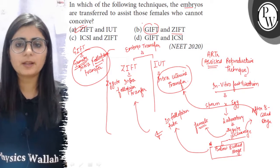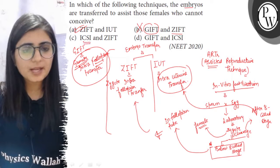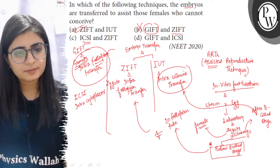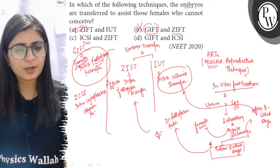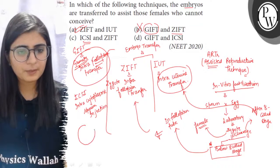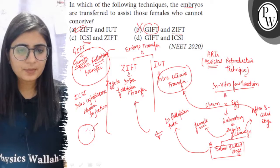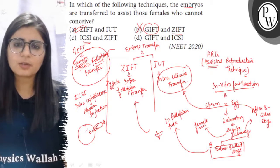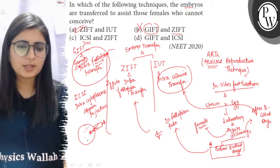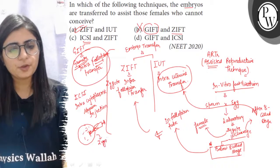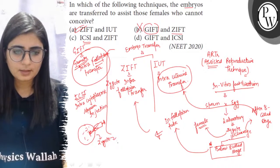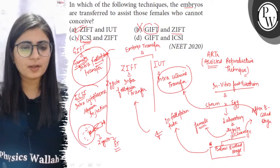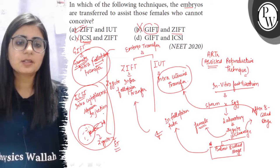GIFT does not involve the transfer of an embryo; rather, it involves the transfer of a gamete, so it is discarded as an answer. The next technique is ICSI — Intracytoplasmic Sperm Injection. It is a technique of In Vitro Fertilization where the ovum is collected from the female and a single sperm is injected directly into the cytoplasm of the ovum through an injection, leading to the formation of a zygote. ICSI is a technique of IVF, not embryo transfer.